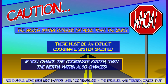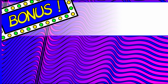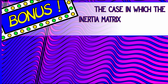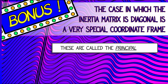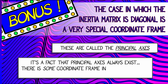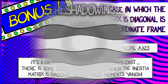And now it's bonus time. Let's think about that special case we've seen when the inertia matrix is diagonal. This is a very special sort of coordinate frame. These axes are called the principal axes of the body. It's a very cool fact that these principal axes always exist — there's some coordinate frame for your body in which the inertia matrix is diagonal and all the mixed moments vanish, even if your body's not symmetric. That is not obvious. That's very cool and it's very dreamlike.